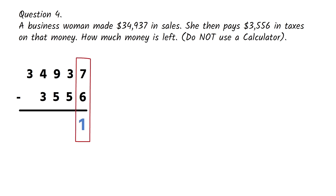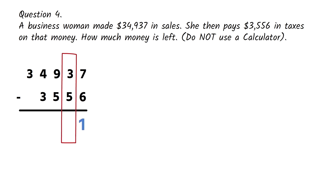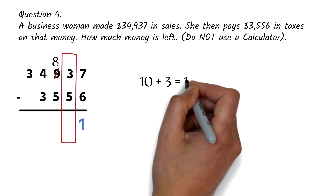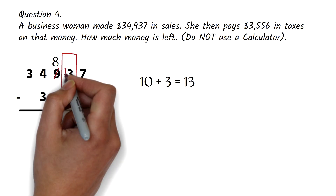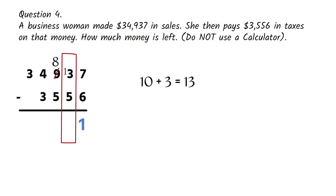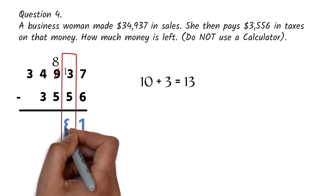We start from the units column. 7 minus 6 is 1. We move to the next column. We have 3 minus 5. Since 3 is less than 5, we will have to borrow 1 from the next column. This is 9; when we borrow 1, it now becomes 8. When you borrow, the value is 10, so we add 10 plus 3 to get 13. For simplicity's sake, when you borrow, you'll just put 1 in front of your number. So we have 13 minus 5, which is 8.